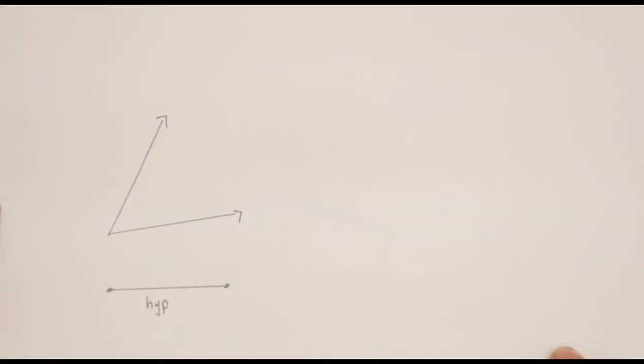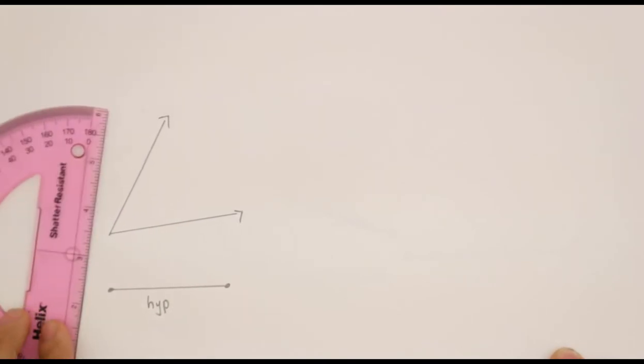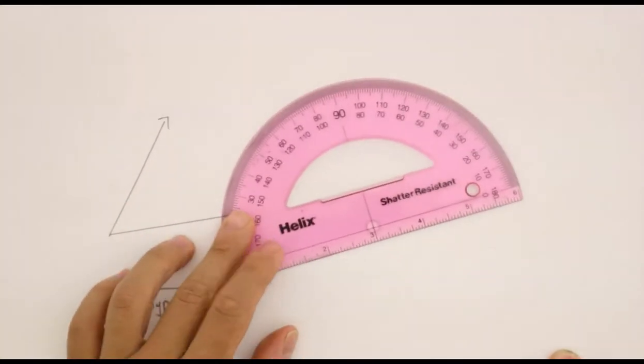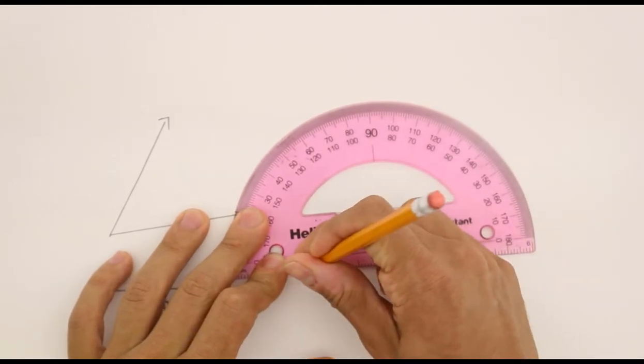Now, could I copy another right triangle, but instead with a given angle and hypotenuse? So here I've been given the angle and given the set length of my hypotenuse.